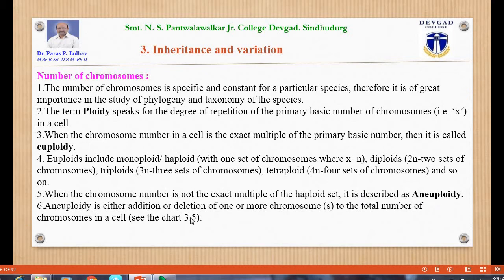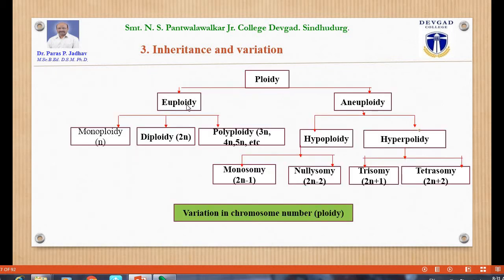Aneuploidy is either an addition or deletion of one or more chromosomes from the total chromosome number. Polyploidy is divided into two types: euploidy and aneuploidy. Aneuploidy includes hypoploidy and hyperploidy. Hypoploidy includes monosomy (2n−1) and nullisomy (2n−2). Hyperploidy includes trisomy (2n+1) and tetrasomy (2n+2). These chromosome numbers are very important for exams.